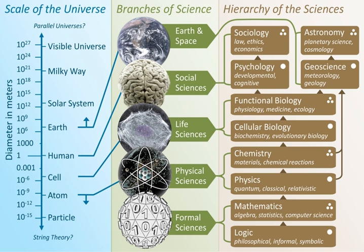Physical science is an encompassing term for the branches of natural science and science that study non-living systems, in contrast to the life sciences. However, the term 'physical' creates an unintended, somewhat arbitrary distinction, since many branches of physical science also study biological phenomena. There is a difference between physical science and physics.